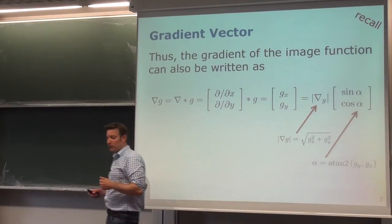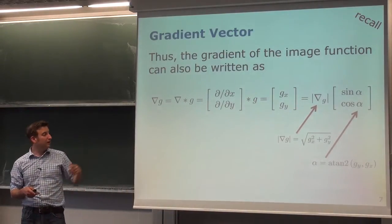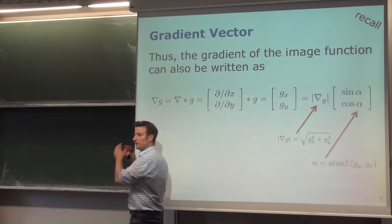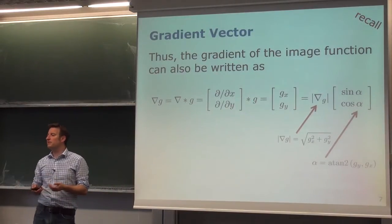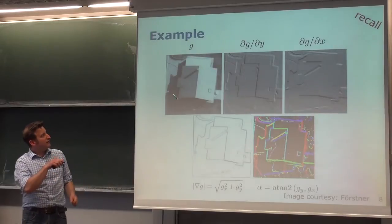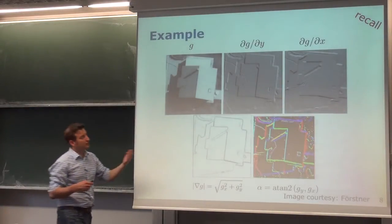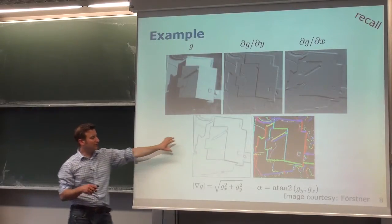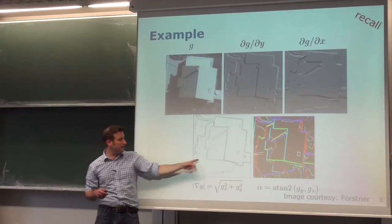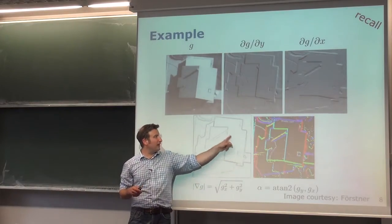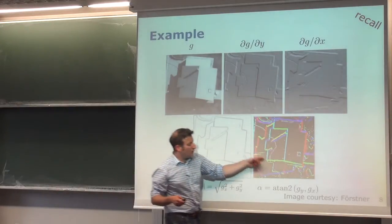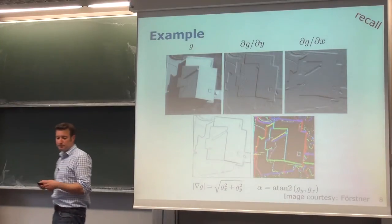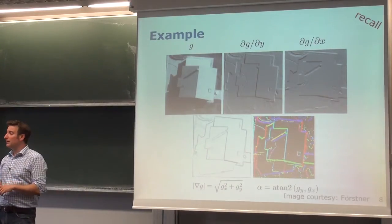From one input image we obtain a two-dimensional structure describing the gradients. We can express this as a magnitude of the gradient as well as its direction. For example, given an input image, we compute partial derivatives with respect to x and y, combine them to get the gradient magnitude — where large values are bright — and encode the direction using different colors.